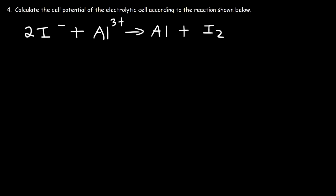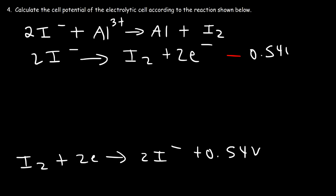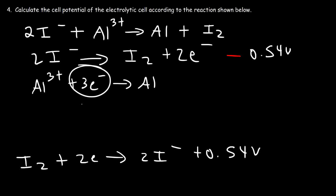For the next problem, we see iodide turning into I₂, which requires two electrons on the right side. The standard reduction potential for I₂ gaining two electrons to form iodide is positive 0.54 V. Since we have the reverse reaction here, this becomes negative 0.54. Then we have the aluminum cation turning into aluminum metal, which requires three electrons on the left side. The reduction potential for aluminum is negative 1.66.